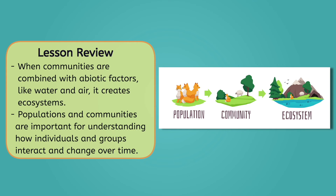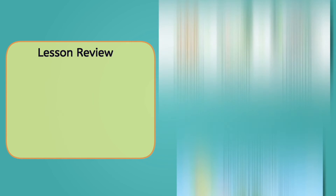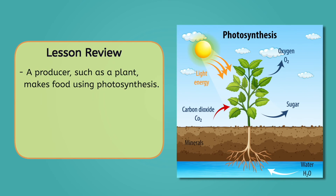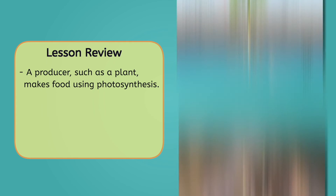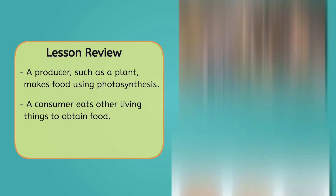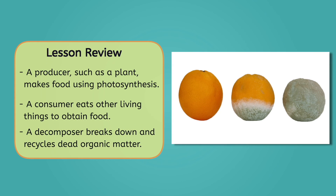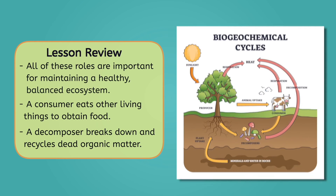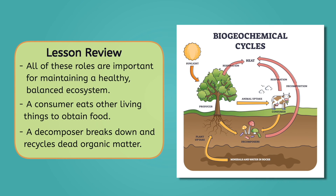Finally, we covered the ecological roles of individuals within communities. A producer, such as a plant, makes food using photosynthesis. A consumer eats other living things to obtain food. And a decomposer breaks down and recycles dead organic matter. All of these roles are important for maintaining a healthy, balanced ecosystem.